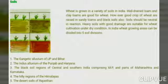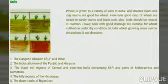Well-drained loam soil and clay loam are good for wheat. However, a good crop of wheat can also be raised in sandy loam and black soil. Soil should be neutral in reaction; heavy soil with good drainage is suitable for wheat cultivation.